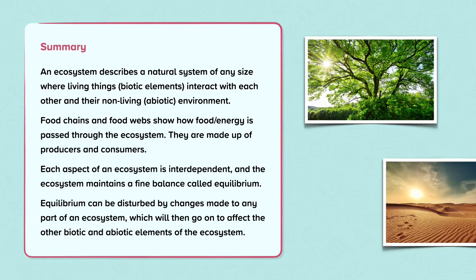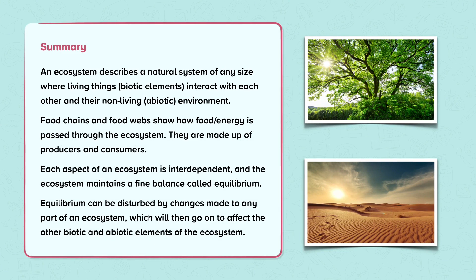In summary, an ecosystem describes a natural system of any size, where living things, or biotic elements, interact with each other and their non-living, or abiotic, environment. Food chains and food webs show how energy is passed through the ecosystem. They are made up of producers and consumers. Each aspect of an ecosystem is interdependent, and the ecosystem maintains a fine balance called equilibrium. Equilibrium can be disturbed by changes made to any part of an ecosystem, which will then go on to affect the other biotic and abiotic elements of the ecosystem.